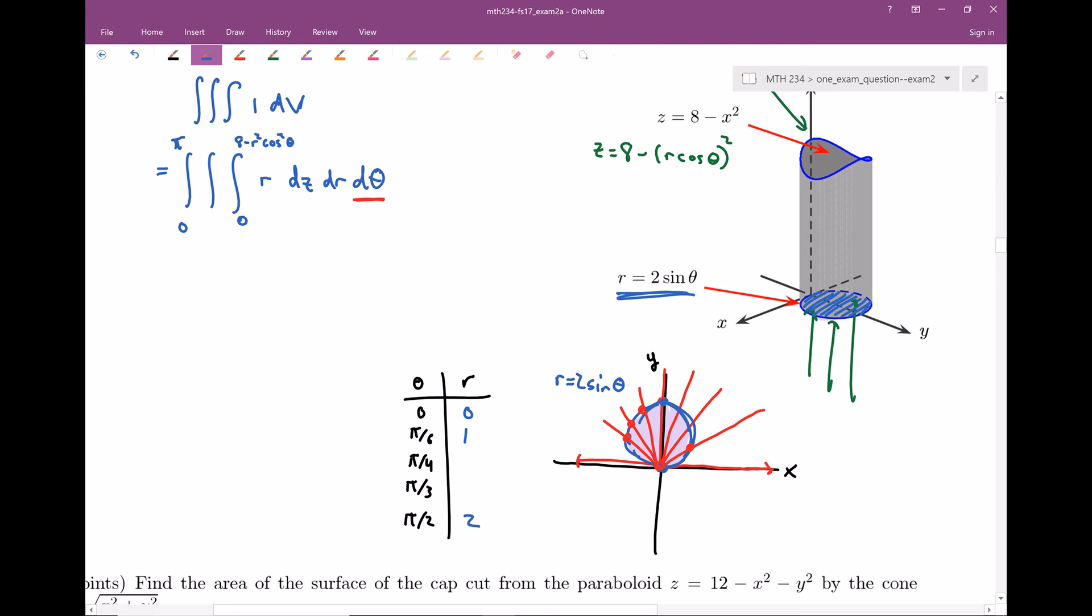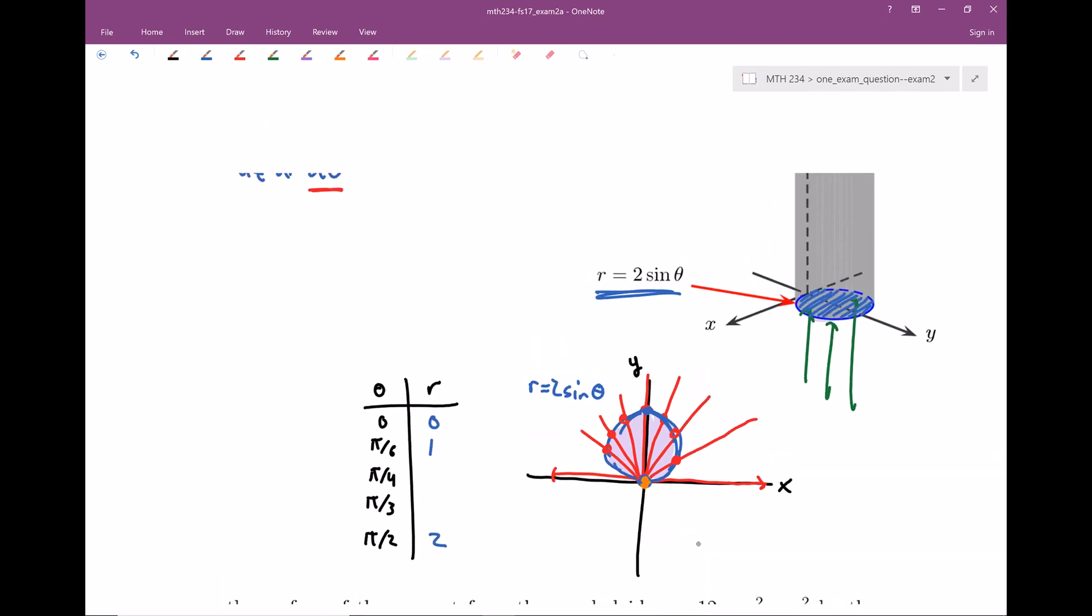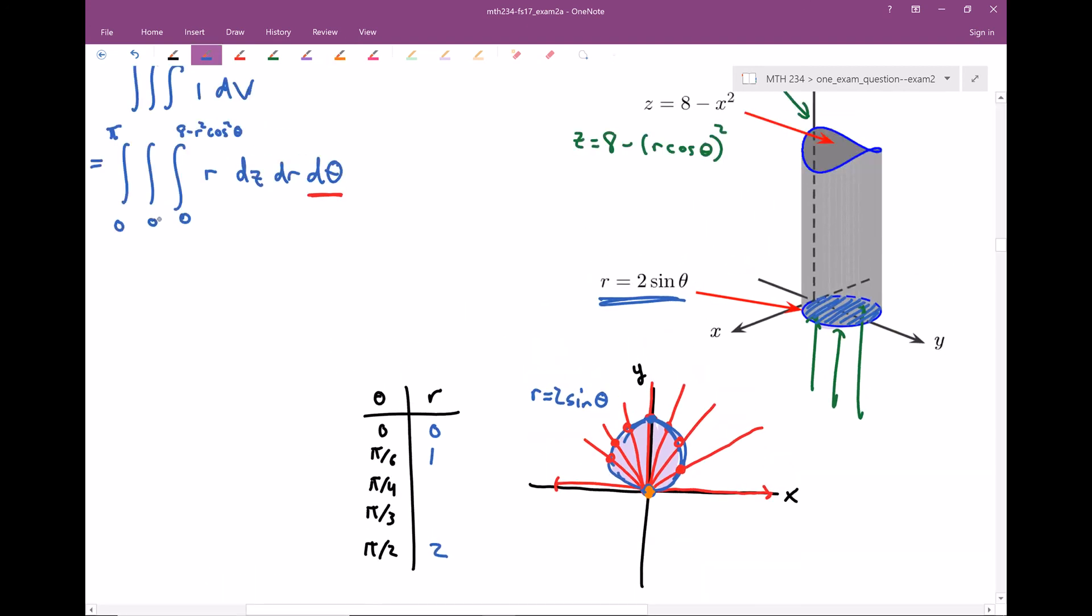The final question is should this r value, two sine theta, is this how we enter the region or is this how we exit the region? And hopefully from this, you can clearly see that this seems to be how we're exiting the region. We always seem to enter the region through the origin. It seems to be always zero. We always seem to enter into this orange dot and we exit through these red dots. So our lower limit of integration for r should be zero. As soon as we take the tiniest step, we're inside of the circle, and we seem to exit through this two sine theta.